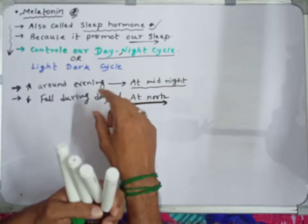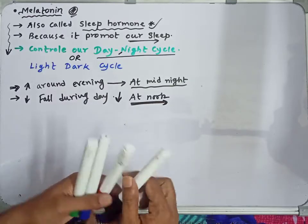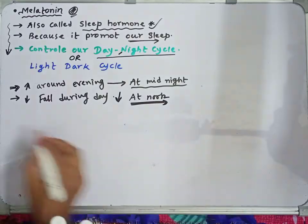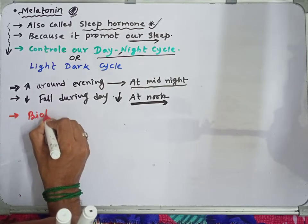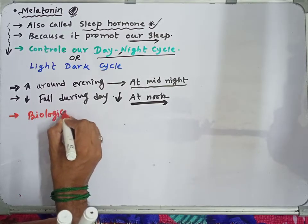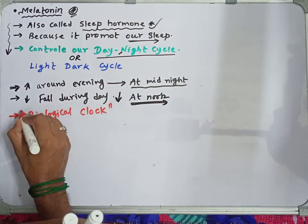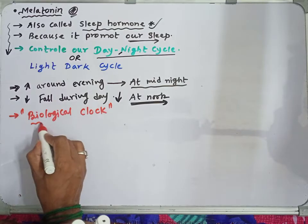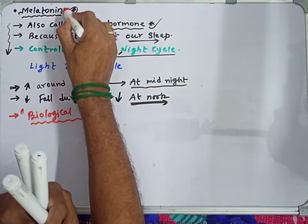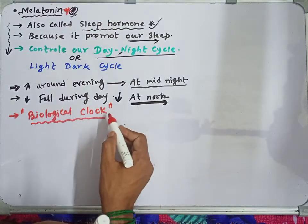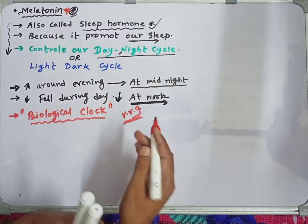Because of this light-mediated response — where light signals through the eye regulate melatonin secretion and the dark cycle — the pineal gland is also called the biological clock.